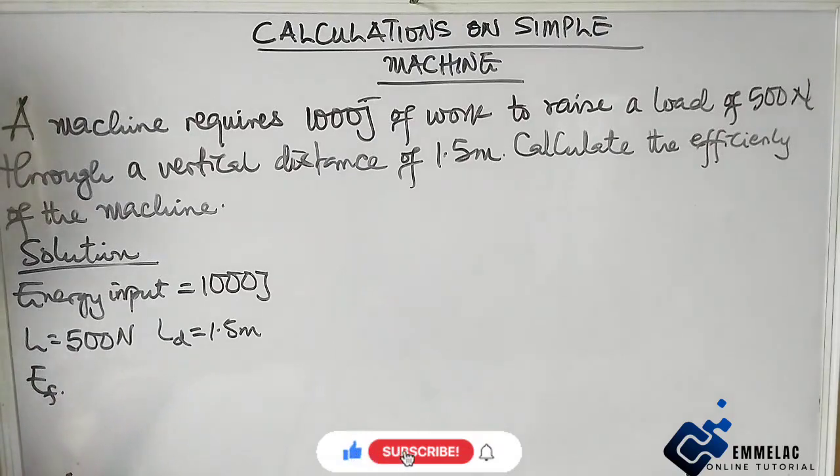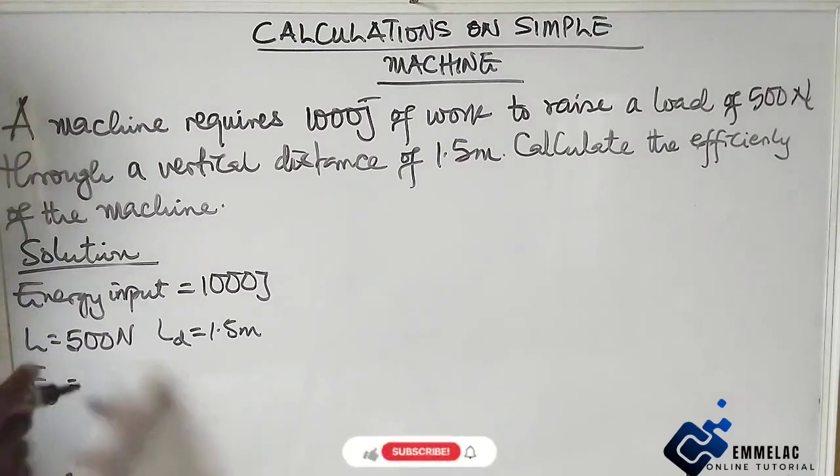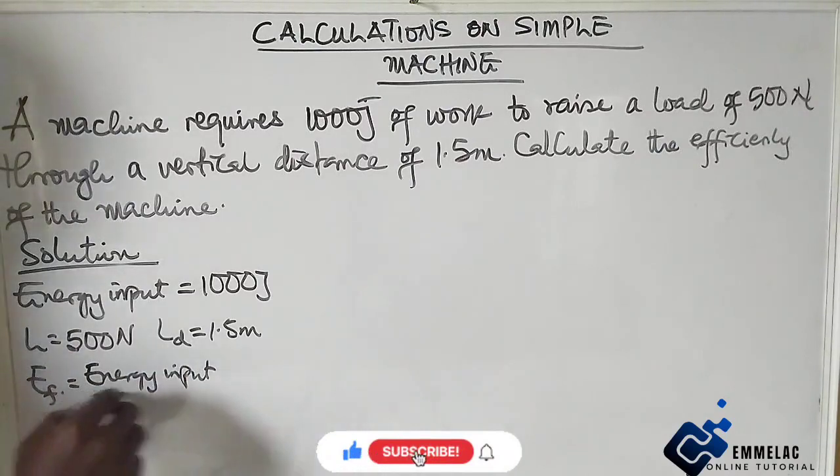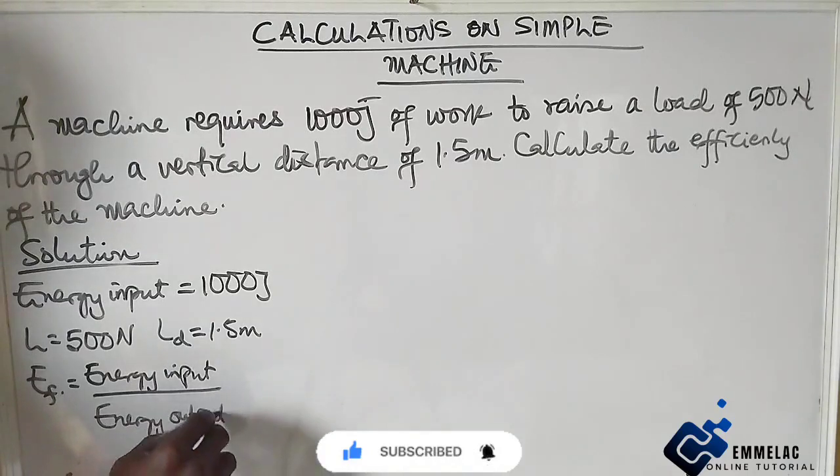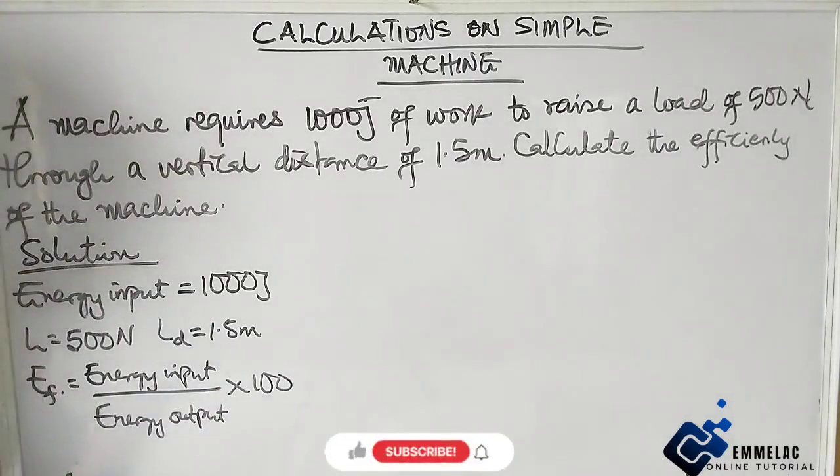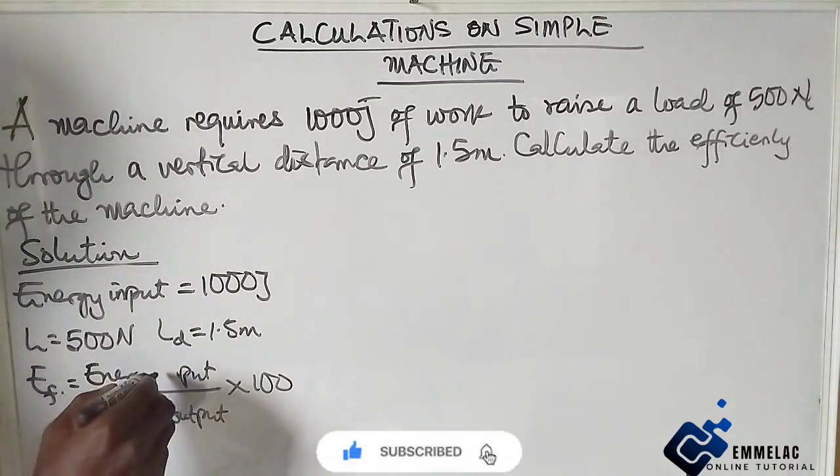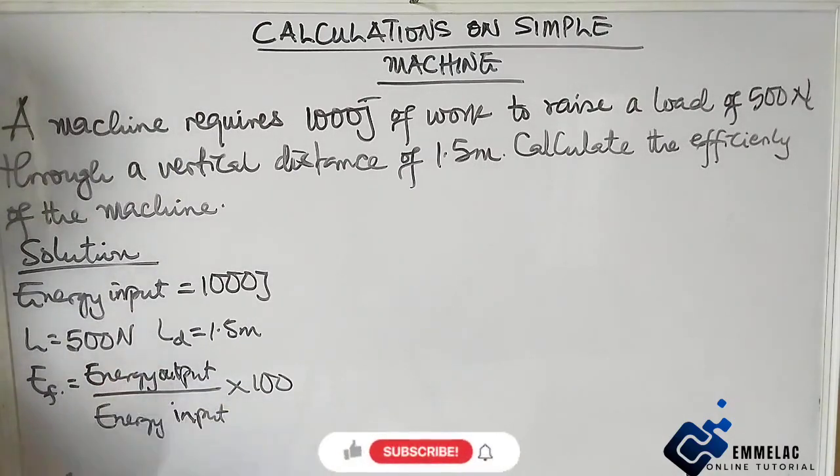In this case, since we're not given mechanical advantage or velocity ratio, efficiency equals energy output over energy input times 100.